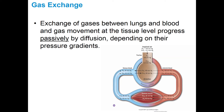Both carbon dioxide and oxygen move from high pressure to low pressure. Oxygen moves from the alveolus into the blood, travels to the muscle, is dropped off at the muscle, carbon dioxide is picked up, returned to the alveolus, CO2 is dropped off and O2 is picked up. That's the basic process of gas exchange.